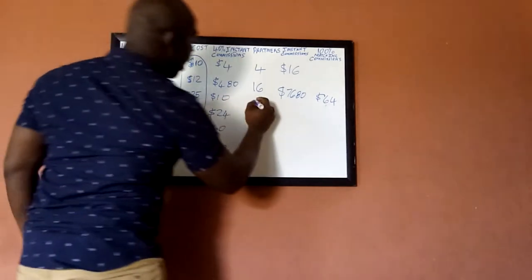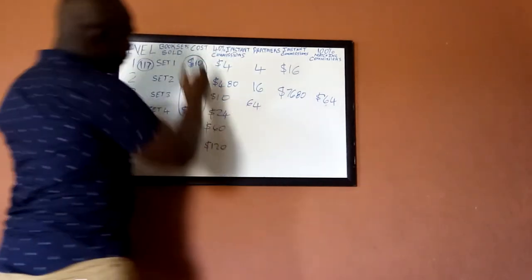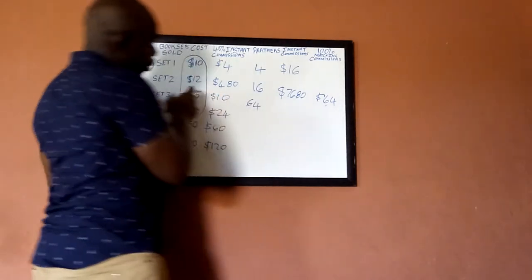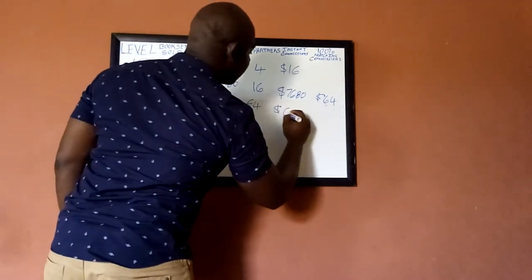Now the 16 people now partner with their four, who have also bought all four set of books. What happens is that the third one that they bought would hit you, so you get paid $640.